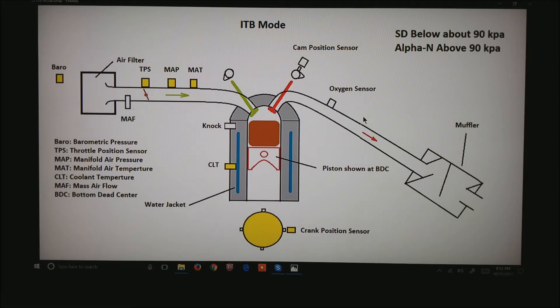The critical sensors are the barrow, your throttle position sensor when you're in alpha n mode, your map in a manifold air temperature for when you're in speed density mode, and again the coolant and crank position sensor.